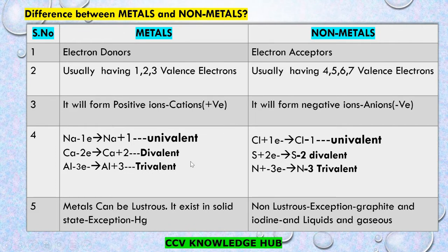Non-metals will form negative ions or anions. For example, chlorine gains one electron and forms Cl⁻ — univalent. Sulphur gains two electrons and forms S²⁻ — divalent. Nitrogen gains three electrons and forms N³⁻ — trivalent.